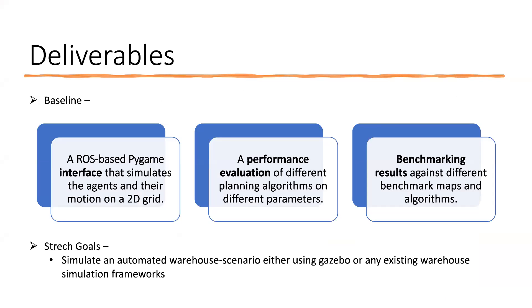These are our deliverables. The baseline deliverables are a ROS-based Pygame interface that simulates the agents, and a performance evaluation report of the different planning algorithms with benchmarking results against different maps. Our stretch goal is to simulate an automated warehouse scenario using Gazebo or another existing simulation framework, implementing the same three algorithms on those frameworks.